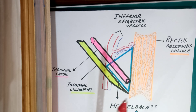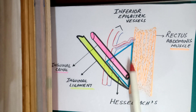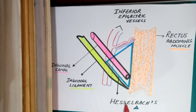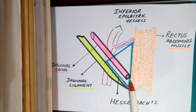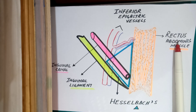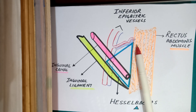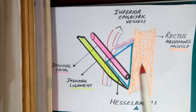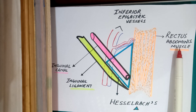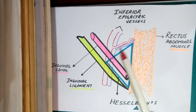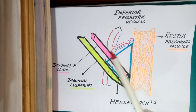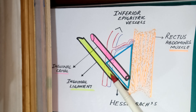These whole structures form a triangle known as Hesselbach's triangle, also called the inguinal triangle. The medial border of Hesselbach's triangle is formed by the lateral margin of rectus abdominis muscle, or linea semilunaris. The superolateral border is formed by the inferior epigastric vessels. The inferior border is formed by the inguinal ligament.